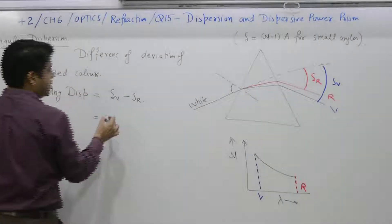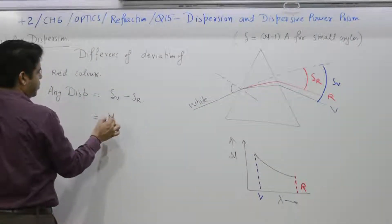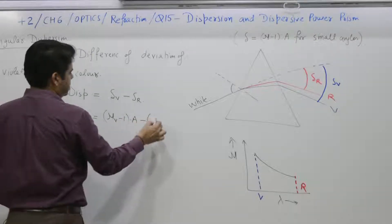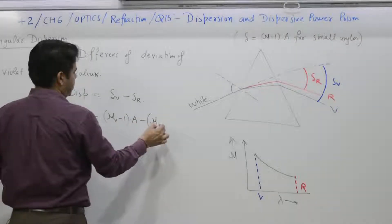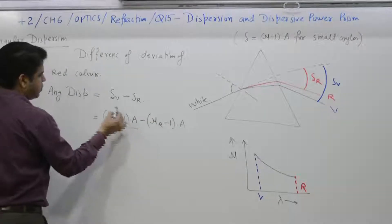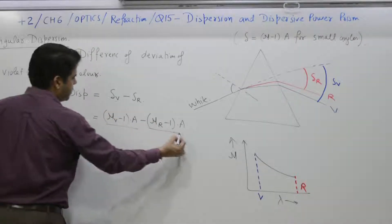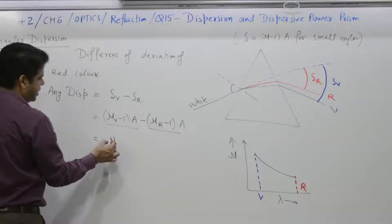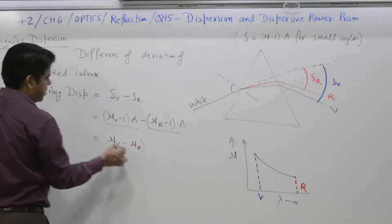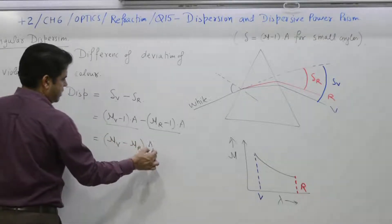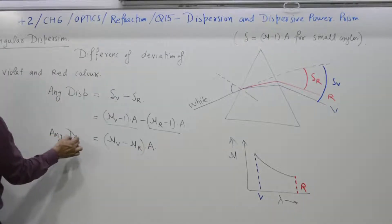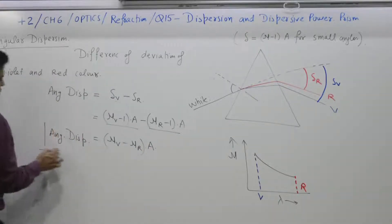So delta_v minus delta_r equals (nu_v minus 1) times A, minus (nu_r minus 1) times A — corresponding to violet and red respectively. What you get is (nu_v minus nu_r) times A. So angular dispersion is equal to (nu_v minus nu_r) times A.